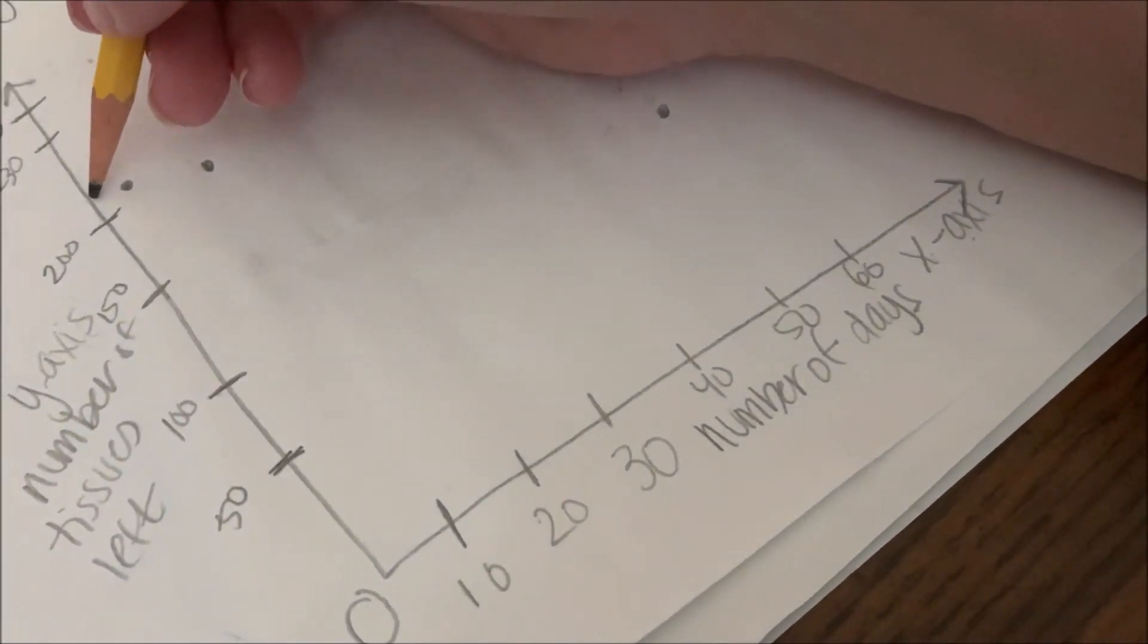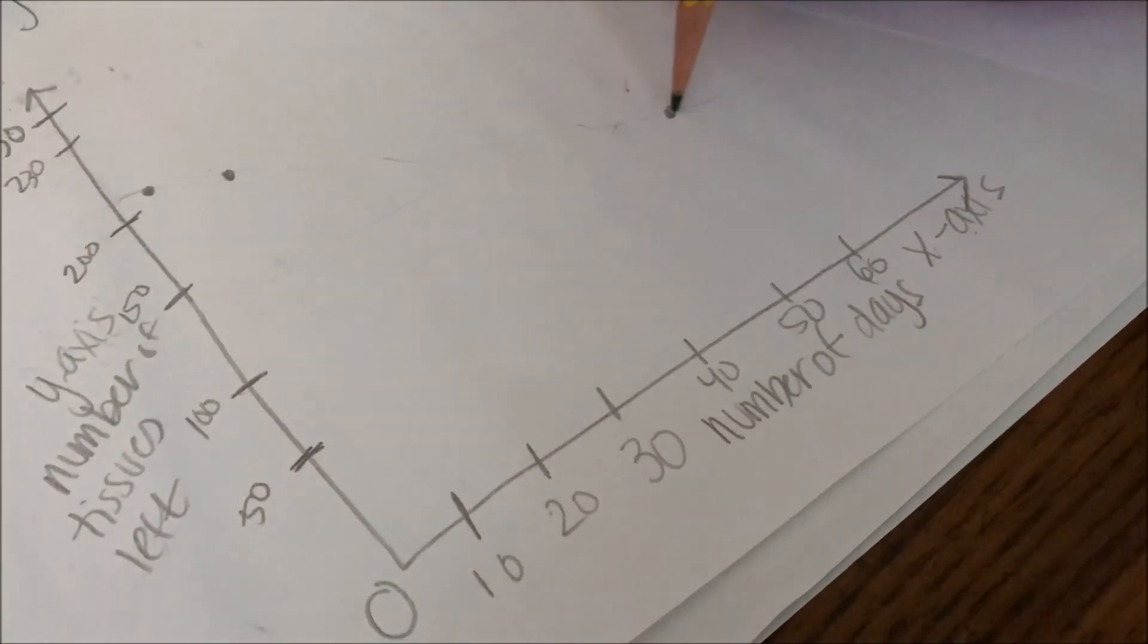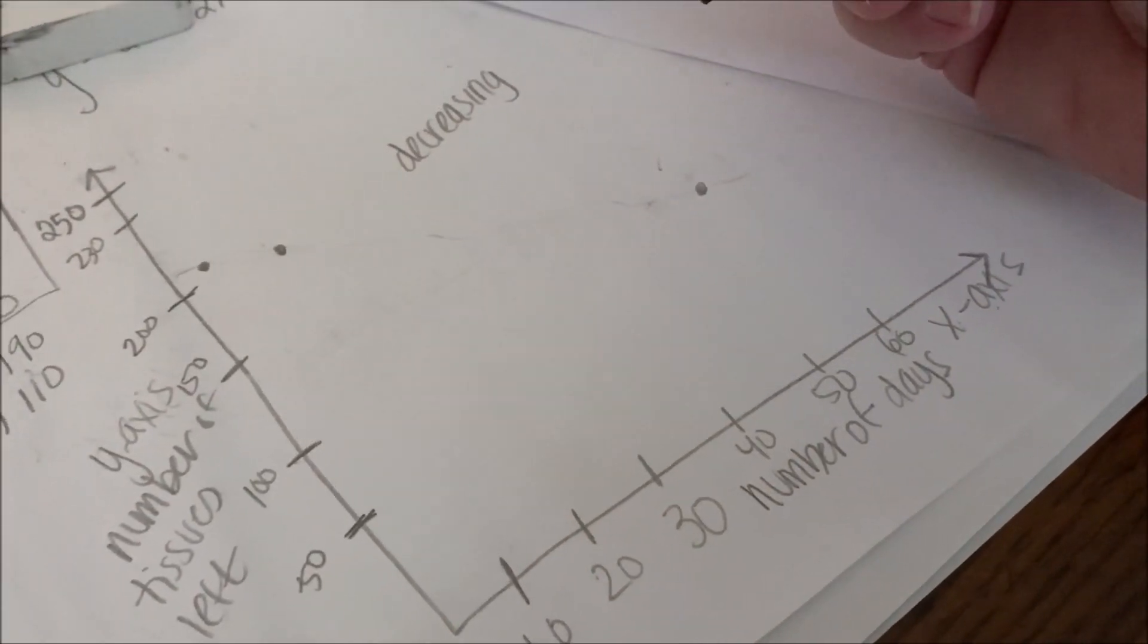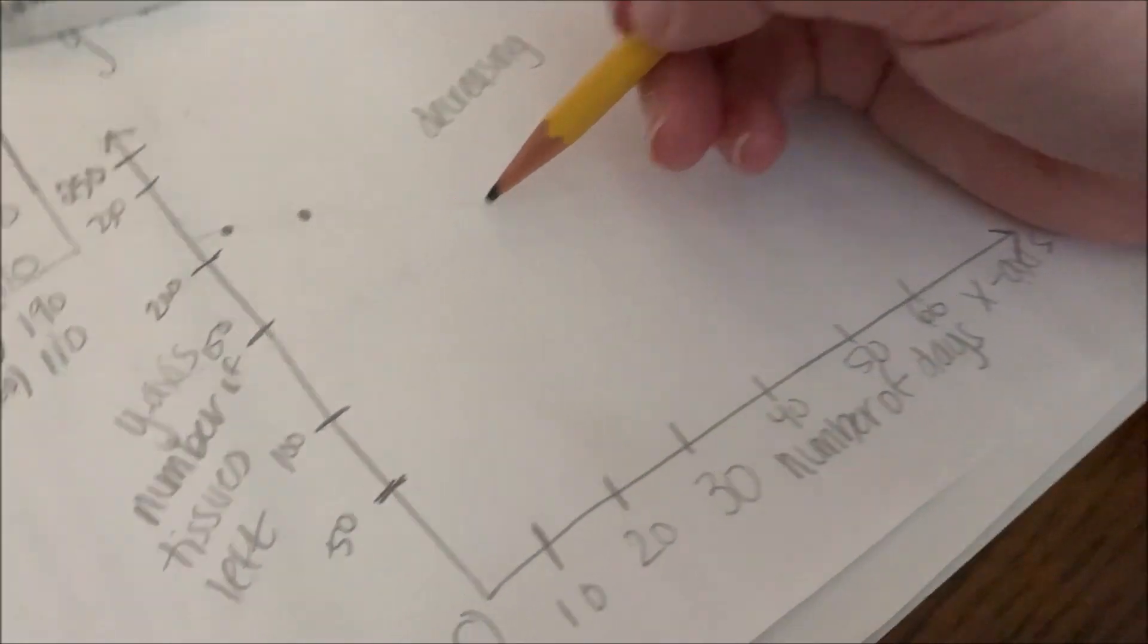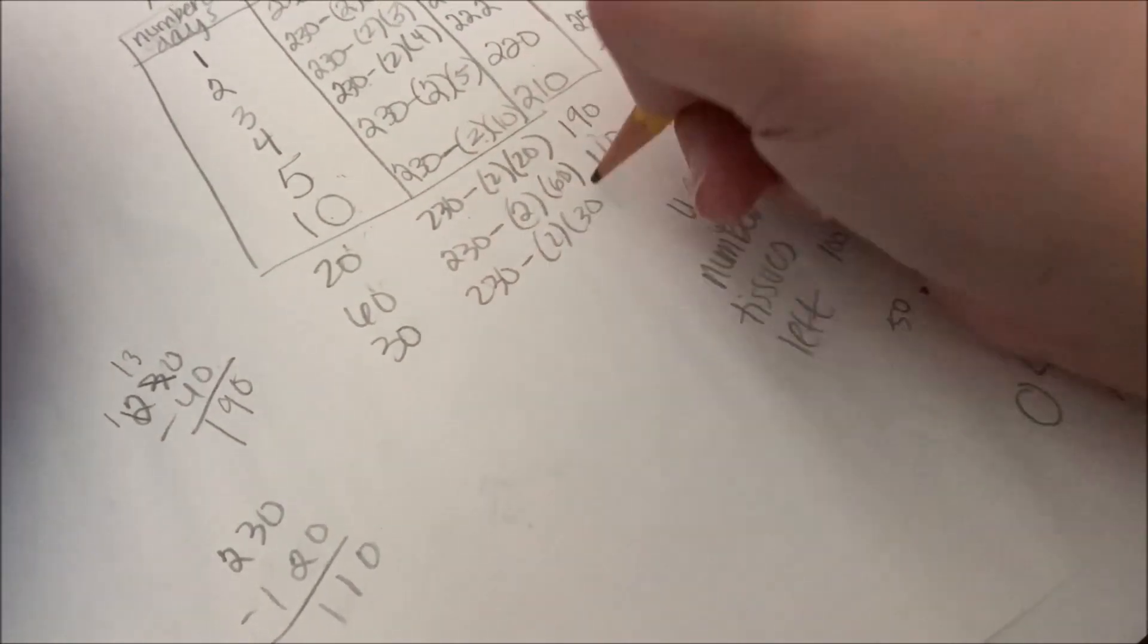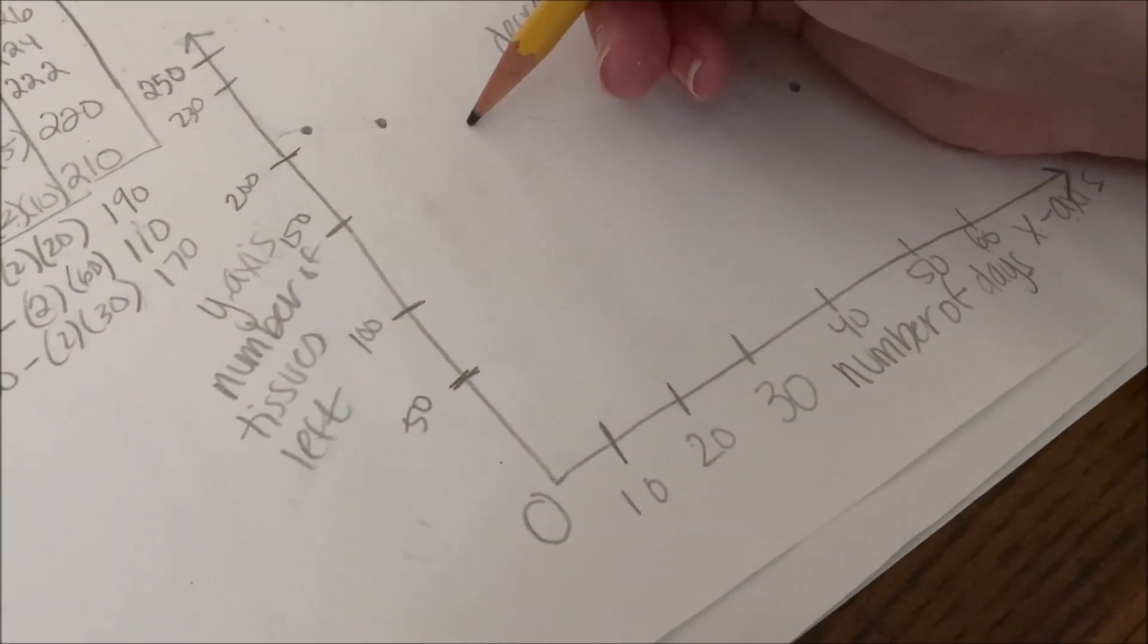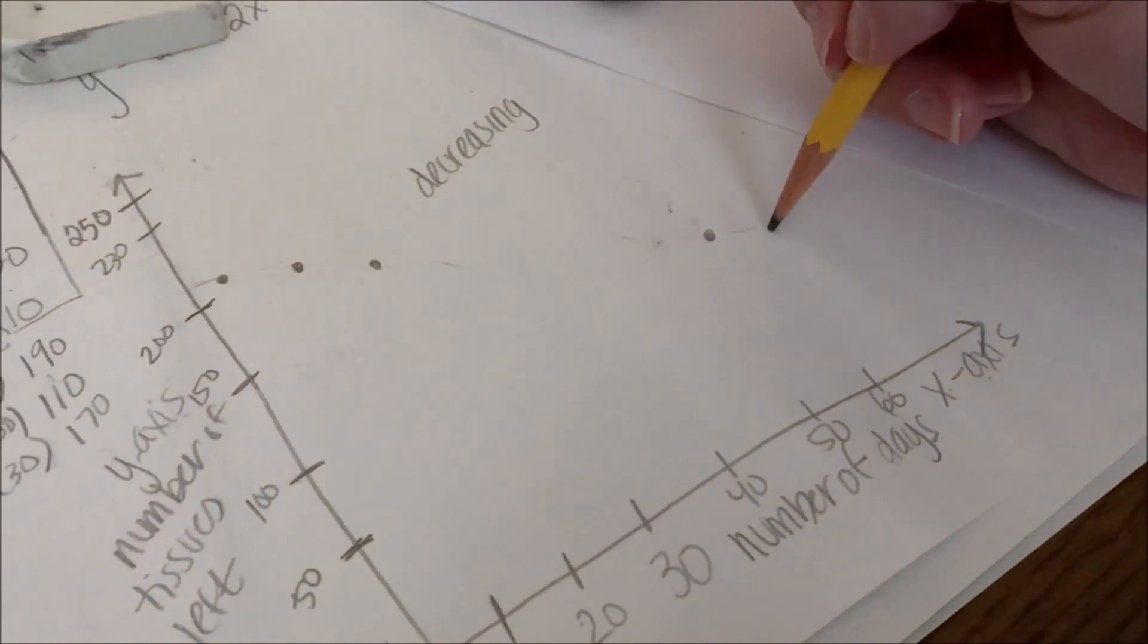Look at this relationship that's going down. This is a decreasing relationship. I know that after 30 days, it's going to be around here. I can come over here and figure out 30 days. So 30 days, 170. And you can see how it fits right here in my decreasing relationship.